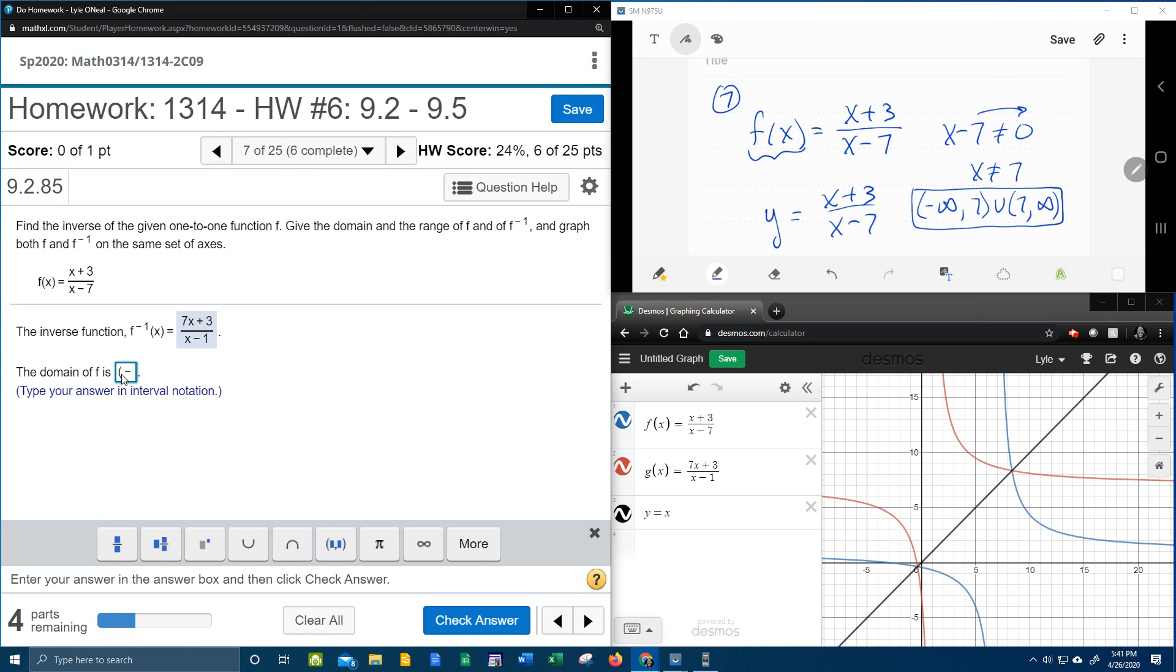Everything from negative infinity up to 7. Remember we use a parenthesis that says 7 is not included. And then we skip over to the other side of 7 and keep going, all the way to infinity.